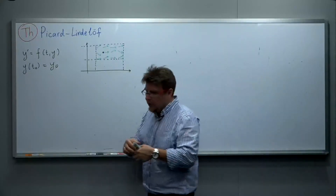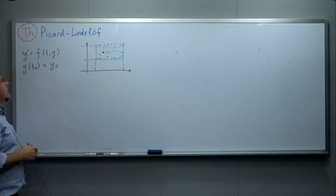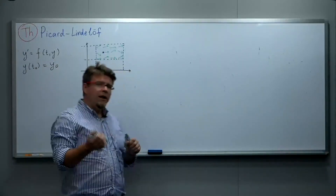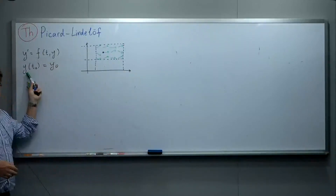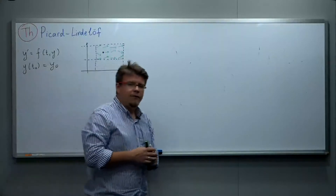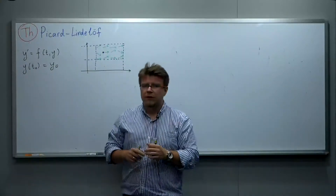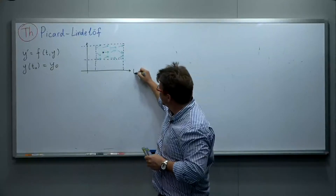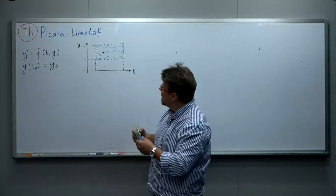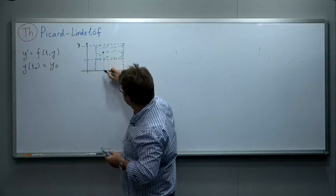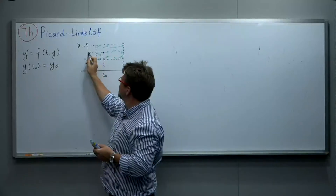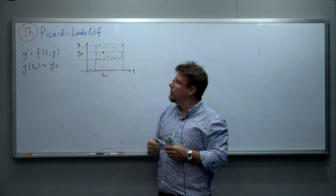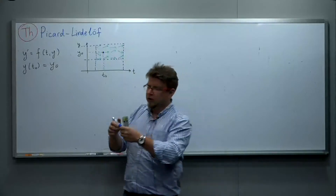So what is the theorem about? In the Picard-Lindelöf theorem we have a differential equation y' = f(t, y), where f(t, y) is some function of two variables, and we have the initial condition y(t₀) = y₀. Further, we assume that the right-hand side of the differential equation is defined in some rectangle in the (t, y) plane, specifically around the initial point (t₀, y₀).